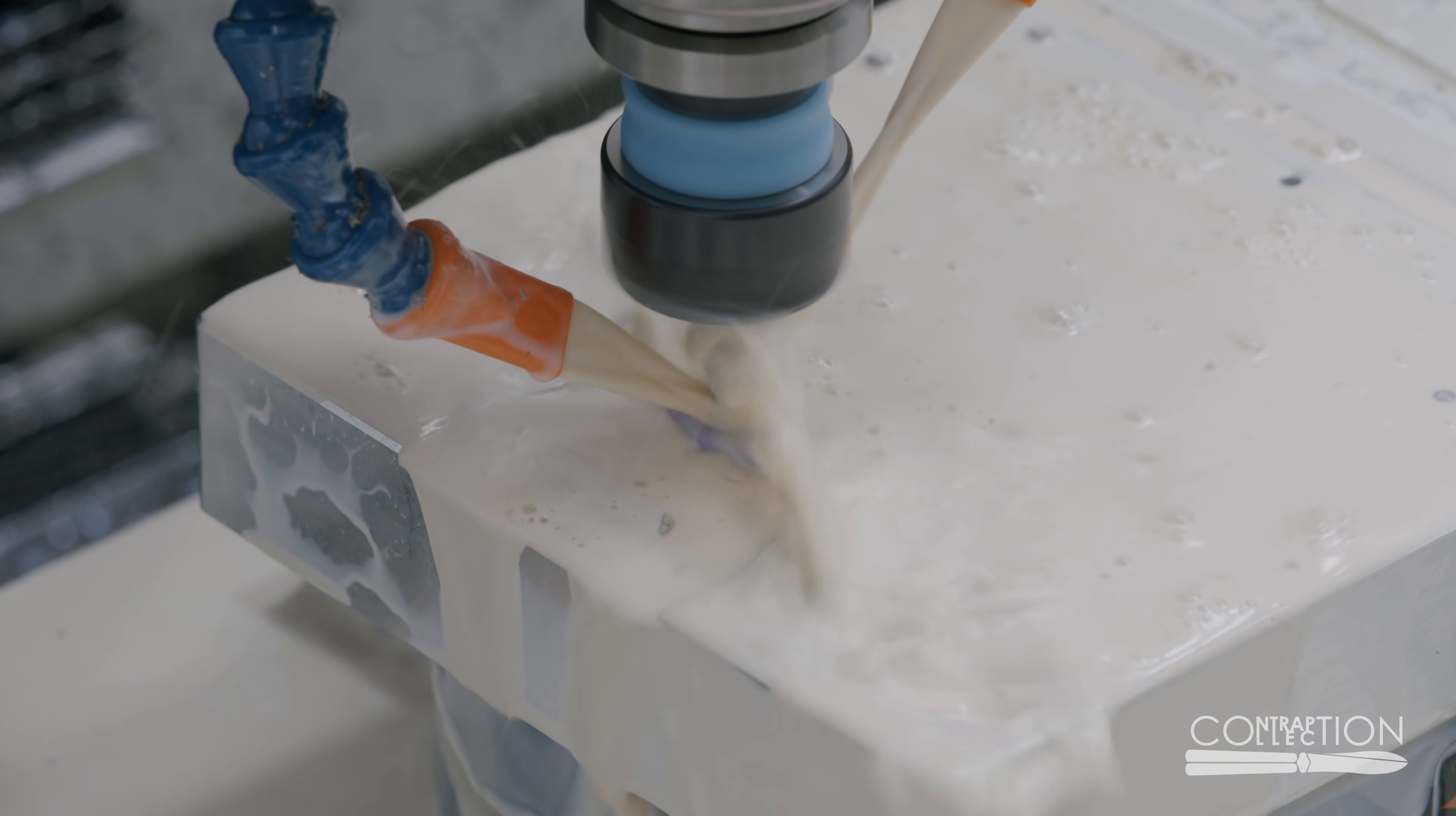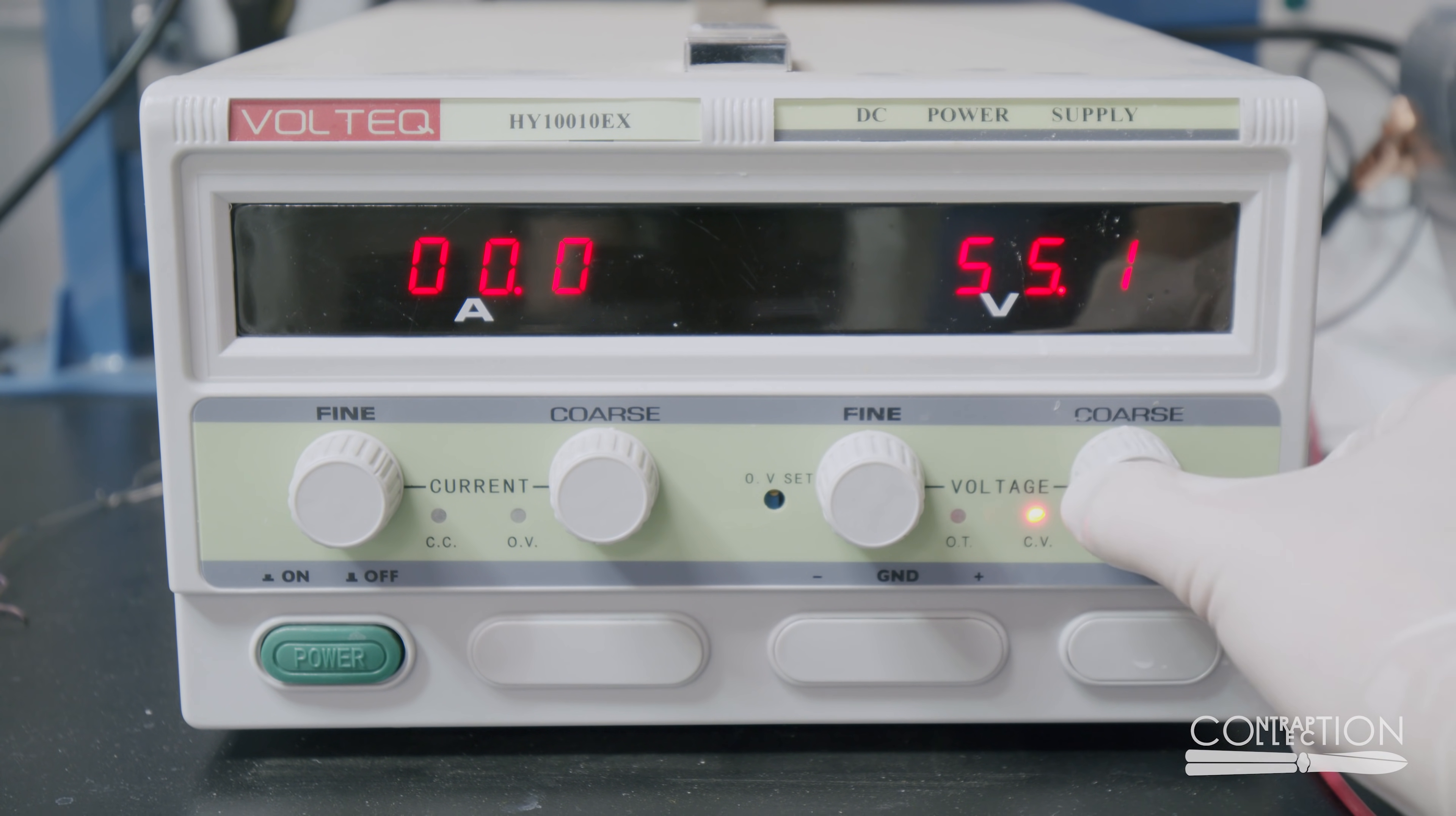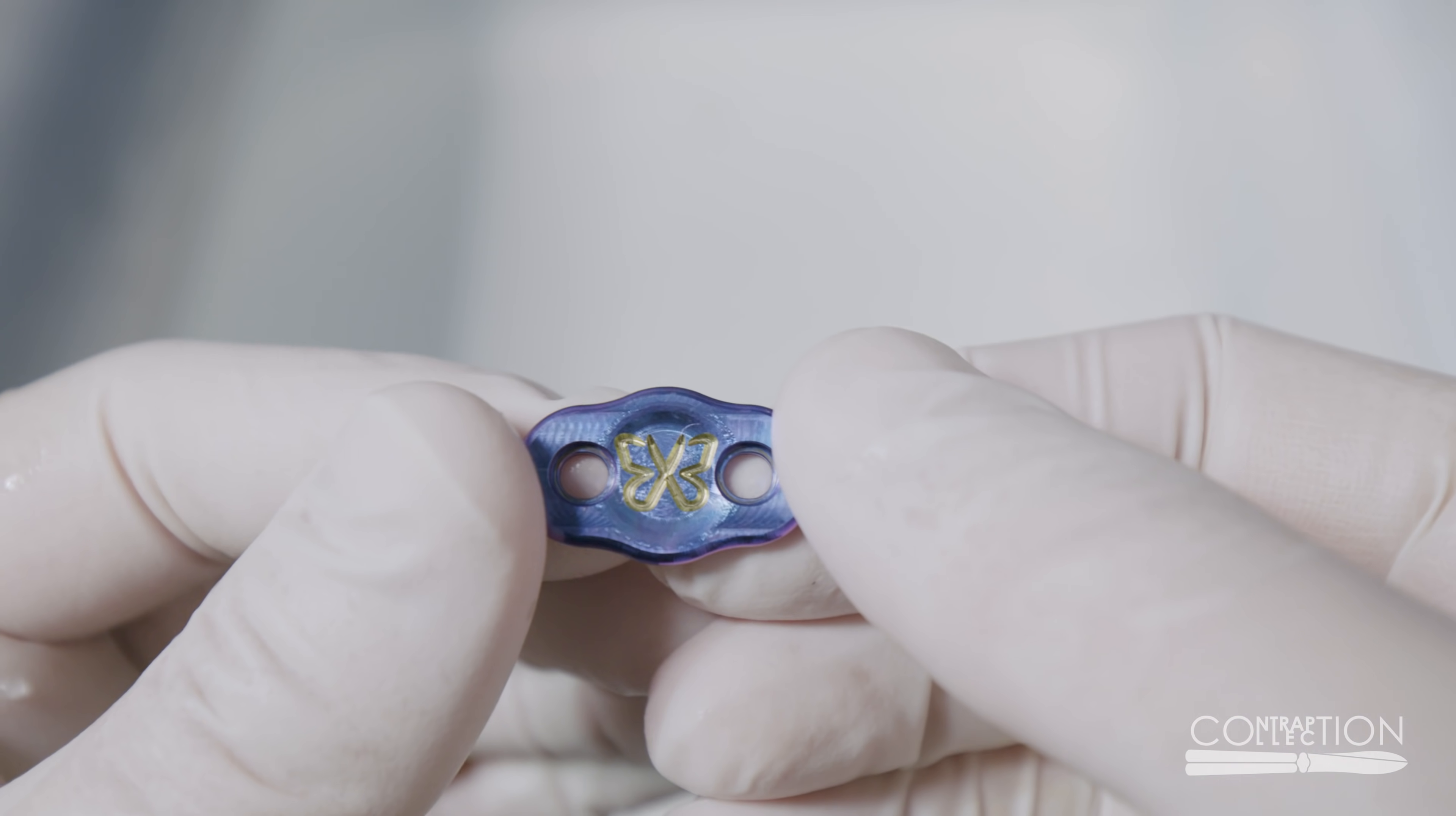I anodized the button first. Then I engraved the logo. Then I re-anodized at a lower voltage. This was much easier.